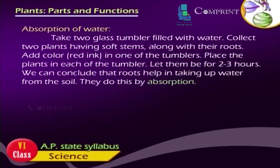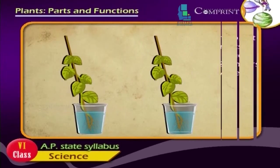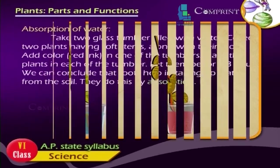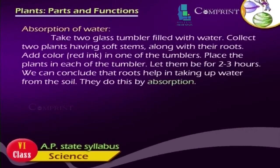Take two glass tumblers filled with water. Collect two plants having soft stems along with their roots. Add color in one of the tumblers. Place the plants in each of the tumblers and let them be for two to three hours. We can conclude that roots help in taking up water from the soil by absorption.